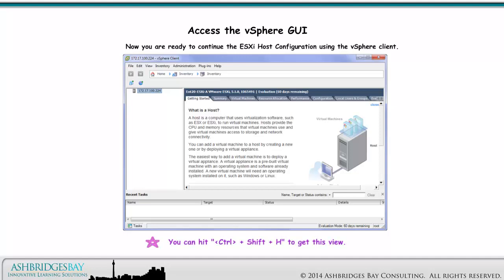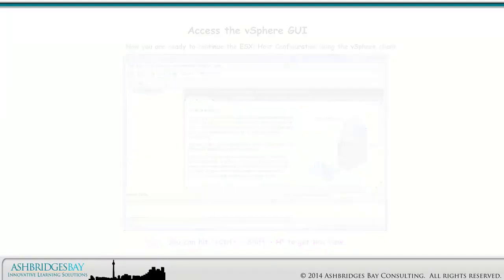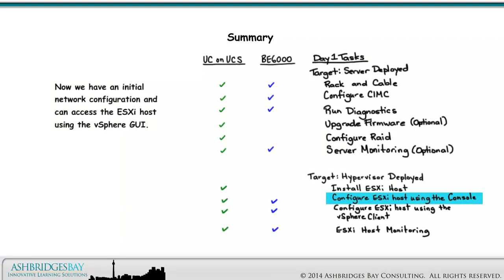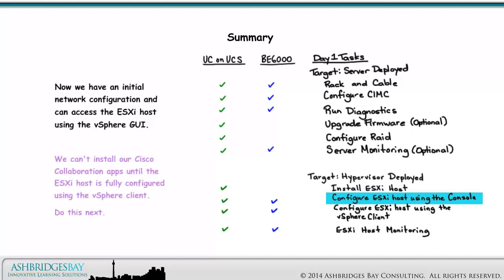Now you are ready to continue the ESXi host configuration using the vSphere Client. You can hit Ctrl-Shift-H to get this view. Now we have an initial network configuration and can access the ESXi host using the vSphere GUI. We can't install our Cisco collaboration apps until the ESXi host is fully configured using the vSphere Client. Do this next.